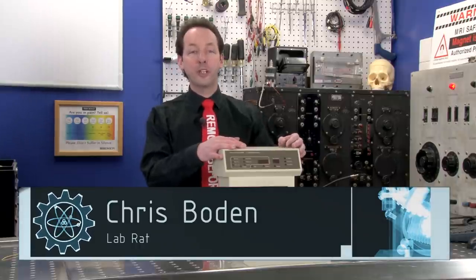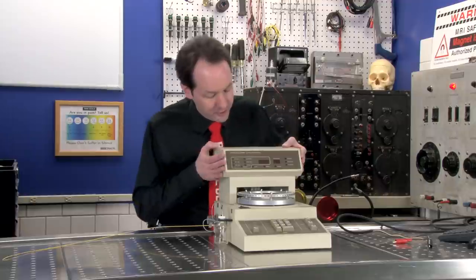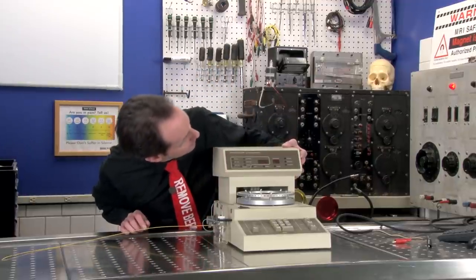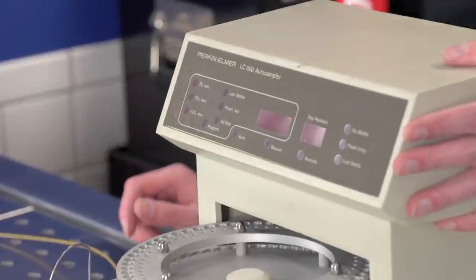Hi there guys, I'm Chris Bowden and welcome to the Geek Group. In today's equipment autopsy, we have this nifty thing which is a Perkin Elmer LC600 auto sampler.